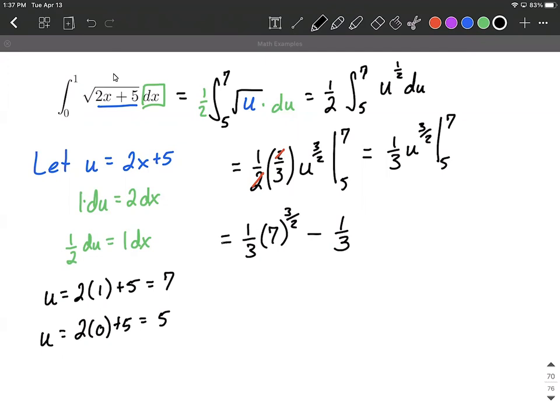Again, I'm bringing the one third along. We substitute in our five for u raised to the three halves power. Now it was okay to plug in straight for u because these are u values for our bounds of integration.